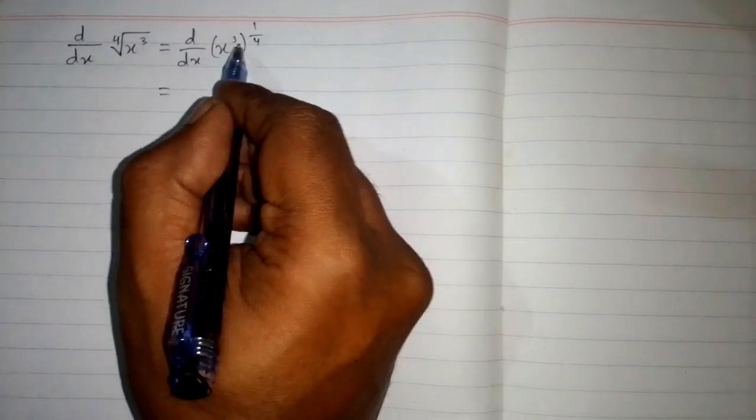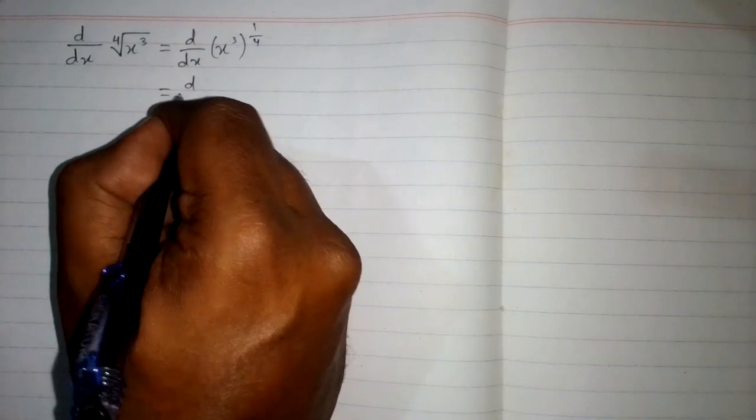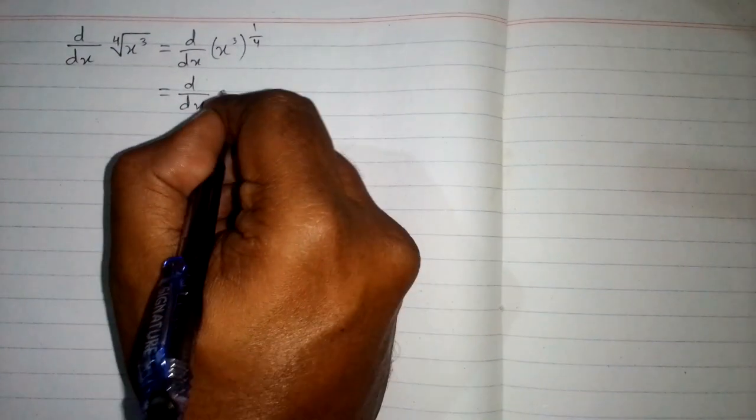Now we can multiply these powers by the rule of indices to get x^(3/4).